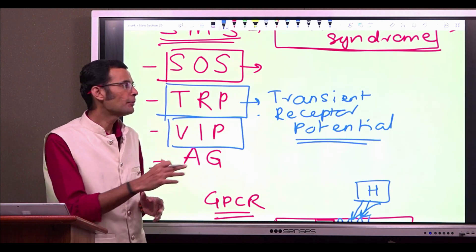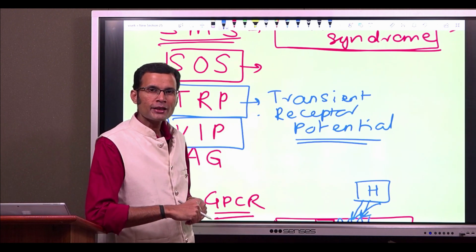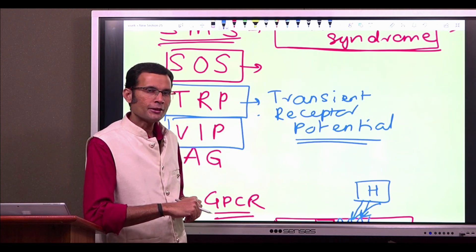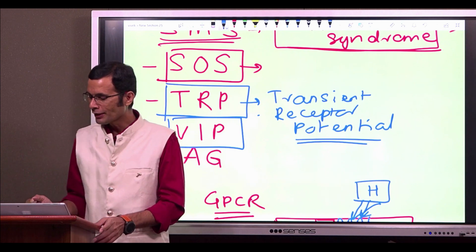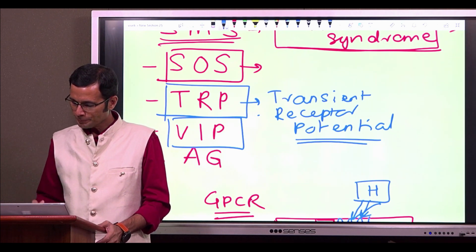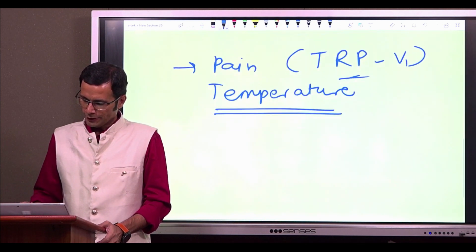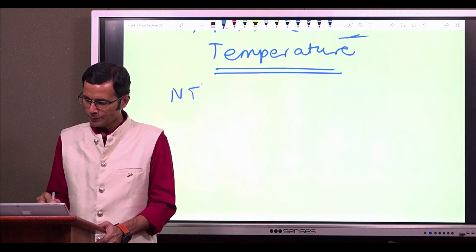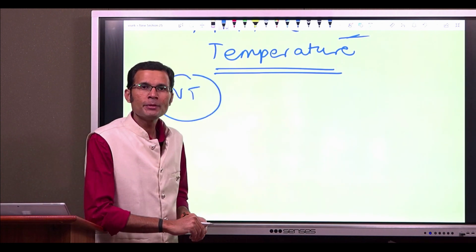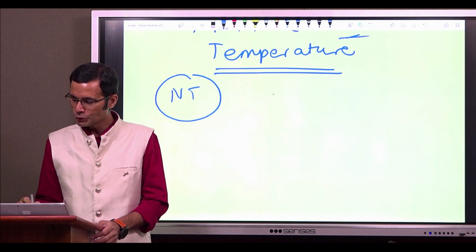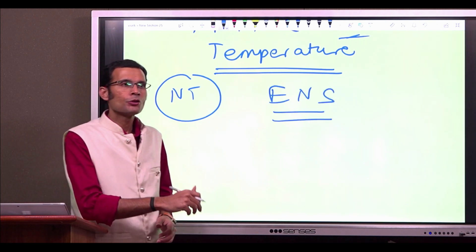In physiology, it means vasoactive intestinal polypeptide. Vasoactive intestinal polypeptide, it is a neurotransmitter and this neurotransmitter is released by the neurons of the enteric nervous system.